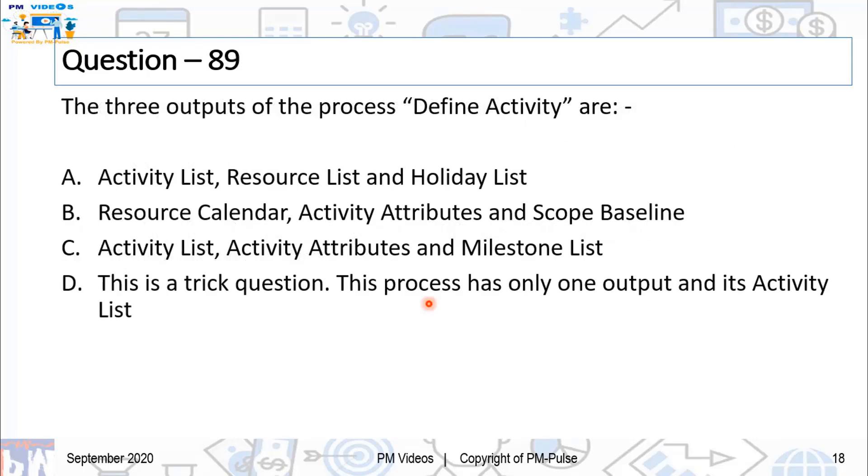Let's move on to question number 89. The three outputs of the process define activity are A, activity list, resource list, and holiday list. B, resource calendar, activity attributes, and scope baseline. And C, activity list, activity attributes, and milestone list. And D, this is a trick question. This process has only one output, and it is activity list.